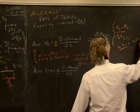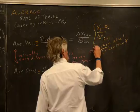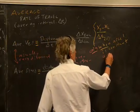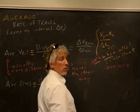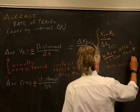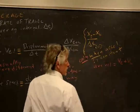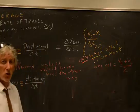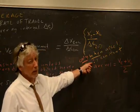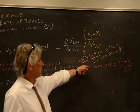Only when acceleration is constant is the average velocity equal to your starting velocity plus your ending velocity, divided by two — the way you normally average two numbers. The only time you can do that is if acceleration is constant, in one dimension. We'll possibly make use of that, but the fundamental definition is average velocity equals displacement over time.